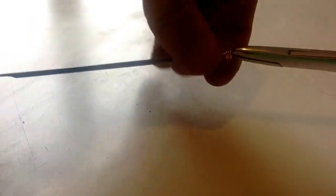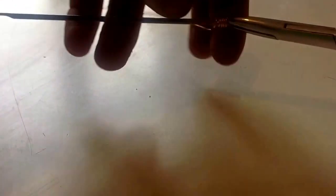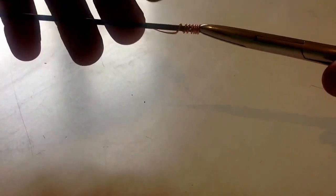And then you just wrap this around. Basically what this does is it gives you something better to hold on to and it also strengthens the pick handle.